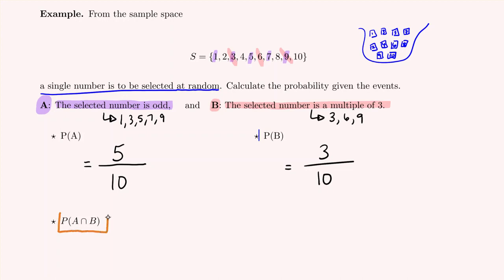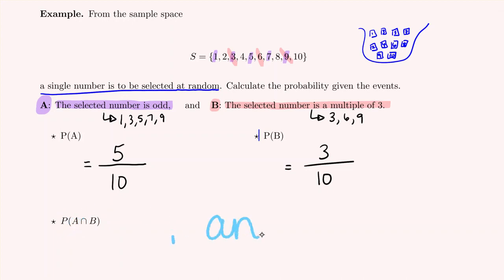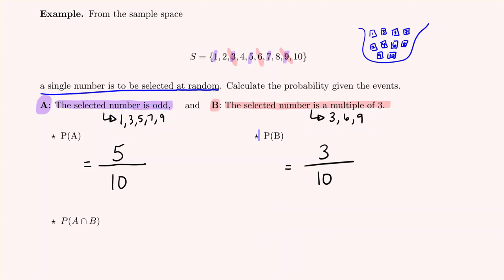Next, P(A∩B) means the probability that A and B both occur — it's asking for the overlap between the two sets. The digits that belong to both groups — odd and multiple of three — are 3 and 9. So there are two digits in the intersection, giving us a probability of two out of ten.